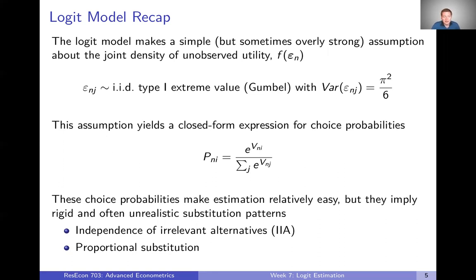The unfortunate part here is that these choice probabilities and really the assumption of the logit model implies some rigid and often unrealistic substitution patterns. This kind of proportional substitution that we talked about a couple weeks ago, as well as the independence of irrelevant alternatives being in place. These kind of properties are likely not to hold in a lot of real empirical settings and so there is a trade off here by making the logit assumption and getting these simple choice probabilities. We're kind of imposing some additional rigidity on how choices are being made.